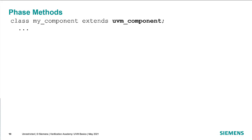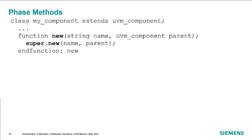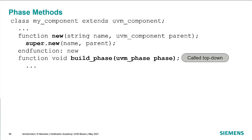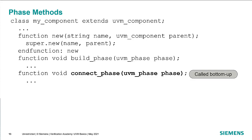Then we have the phase methods. In any particular component — in this case my component extending from UVM component — we have the constructor, which we've talked about. Then there is the build phase method: it is called top-down, so as every component gets created its build phase gets called, and the build phase is used to create sub-components. Once those are created, their build phase methods are called in turn. Then we have the connect phase where we connect together the ports and exports of all these components, and this is called in a bottom-up fashion.